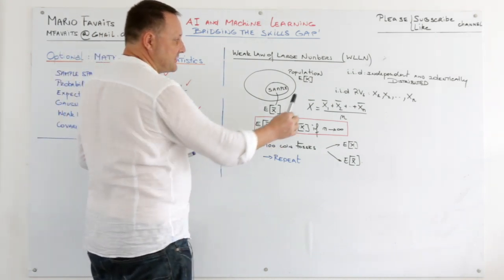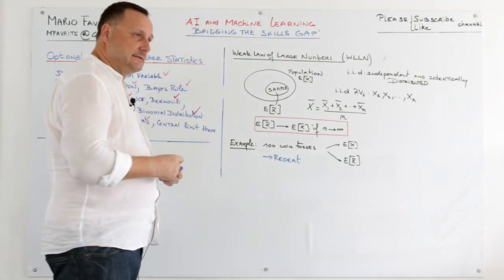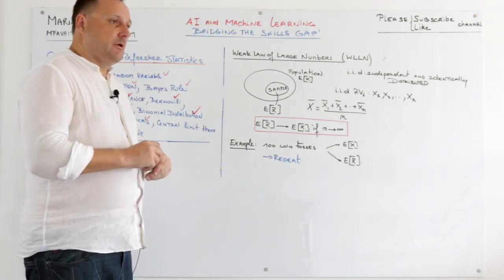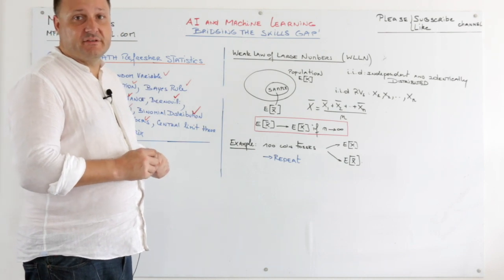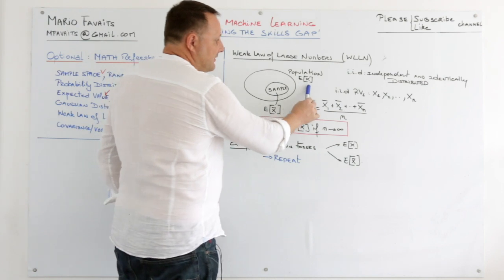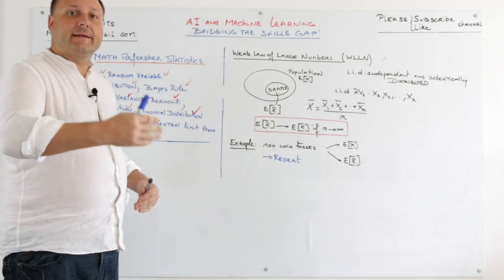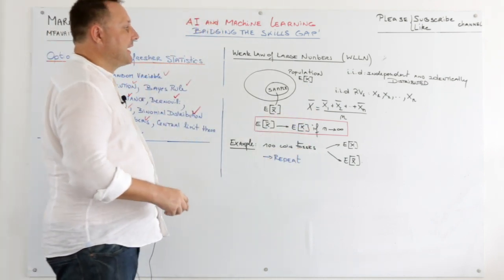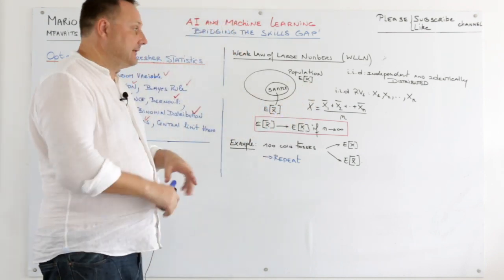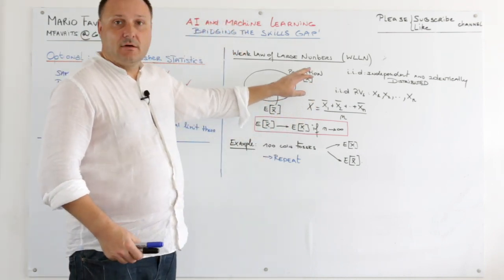We have a population and there is a mean. The population could be all the males in Singapore, and the random variable could be the height. So you can calculate the average height for Singapore.